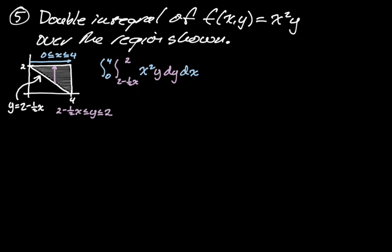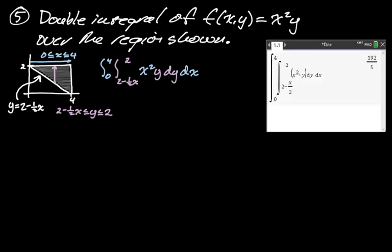Now I know this is a function of x times a function of y, so typically I would split it — but I can't here because y depends on x. Look at the bounds: since y depends on x, I have to do the integral for y first and then for x. I'll just let the calculator do the work. I got 192 over 5.